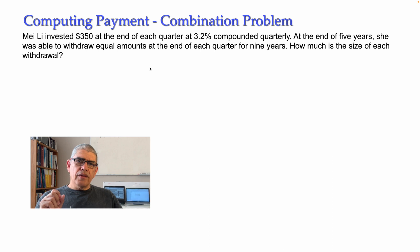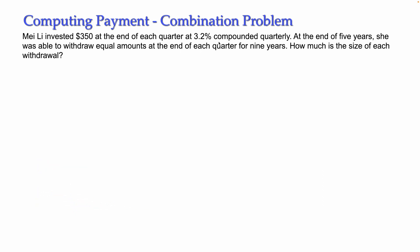Or maybe we have two different periods with different annuities, and that is the case in this problem. The problem says: Mary Lee invested $350 at the end of each quarter at 3.2% compounded quarterly. At the end of five years she was able to withdraw equal amounts at the end of each quarter for nine years. How much is the size of each withdrawal?